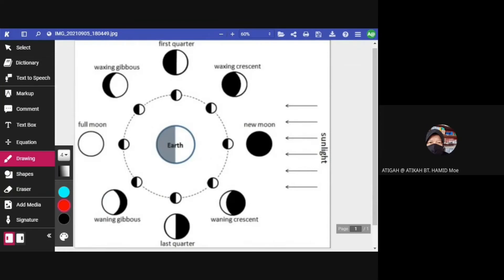Now, look at this diagram. This is a new moon, and this is a crescent. What is the difference between this crescent and this crescent? This is a crescent, and this one also is a crescent. And this is a half moon. So, what is the difference?